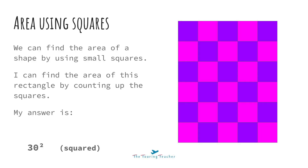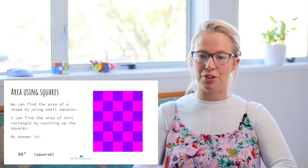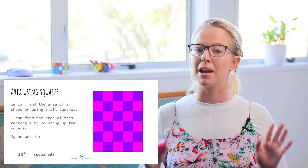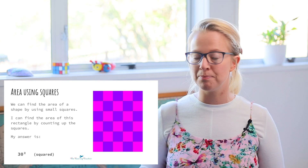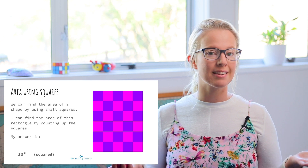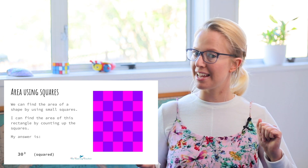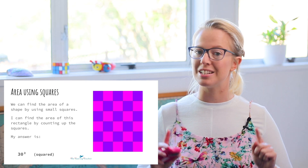Let's count: 1, 2, 3, 4, 5, 6, 7, 8, 9, 10, 11, 12, 13, 14, 15. Actually, I can count in 5s — let's go from the beginning again: 5, 10, 15, 20, 25, 30. Perfect. So there are 30 little squares inside my rectangle, so that's going to tell me that my answer for the area of this rectangle is 30 squared.